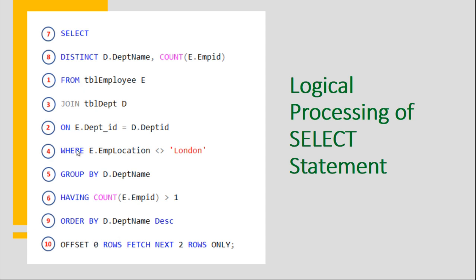After that, this data will be fed to the WHERE clause — employee locations not equal to London will be retained, and those equal to London will be discarded. After that the data will be grouped by department name, and then the HAVING clause will be executed. Upon grouping by department name, if the count of employees is greater than one that will be retained; if equal to one or less, it will be discarded.